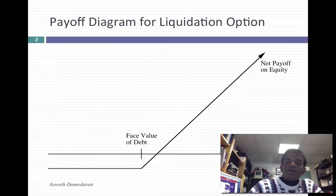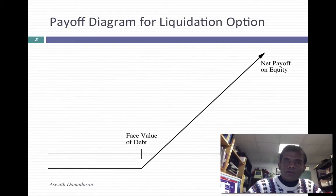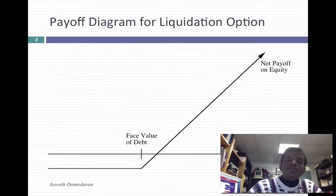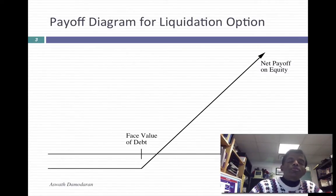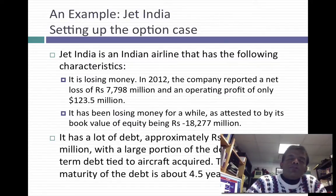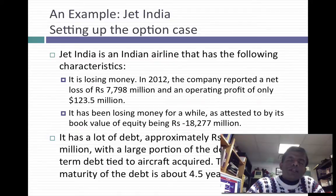That's the example we set up in class using an abstract company with a zero-coupon bond — a given face value, maturity, and asset value. We talked about applying this to a real company but didn't get much chance to try it out. So what I'd like to do is use this approach to value equity in a deeply troubled company. The company I'm going to use is Jet India, an Indian airline in a lot of trouble.